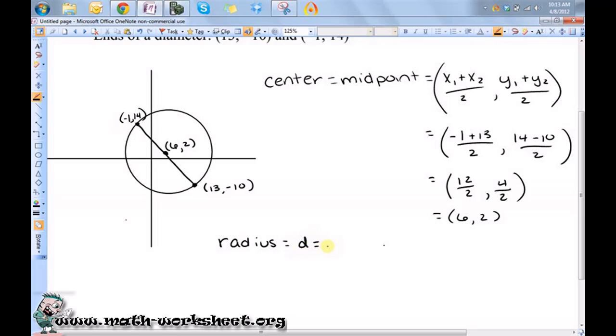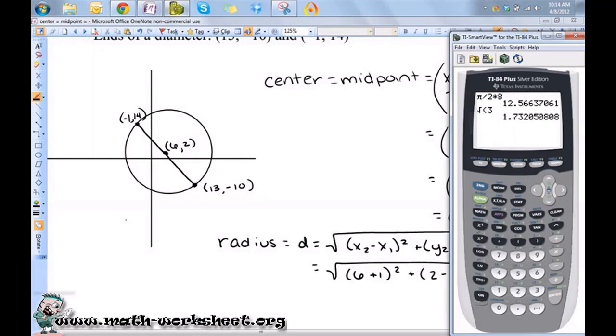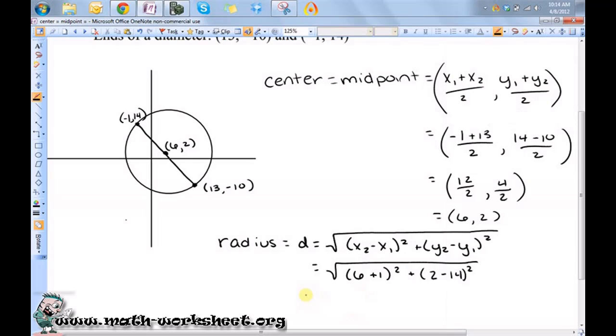Okay, so the radius is equal to the distance formula, which is x2 minus x1 squared plus y2 minus y1 squared. Okay, so I said I would use these two points. So it's equal to 6 plus 1 squared plus 2 minus 14 squared. Okay, so that's just 7 squared plus negative 12 squared, which equals 193. So the distance is equal to the square root of 193.